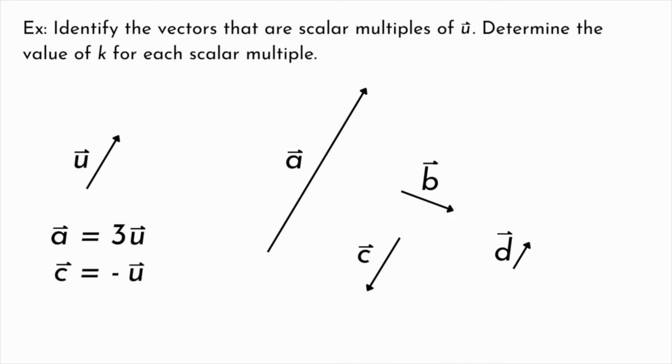All right, our last vector here is vector d. And we can see that this one appears to be smaller than vector u. If we bring in vector u and place it next to vector d, we can see that two vector d's arranged from tip to tail will produce vector u. So we could say that the magnitude of vector d is half the size of the magnitude of vector u. So the value of k in this case would be one half. We can say that vector d is equal to one half vector u.